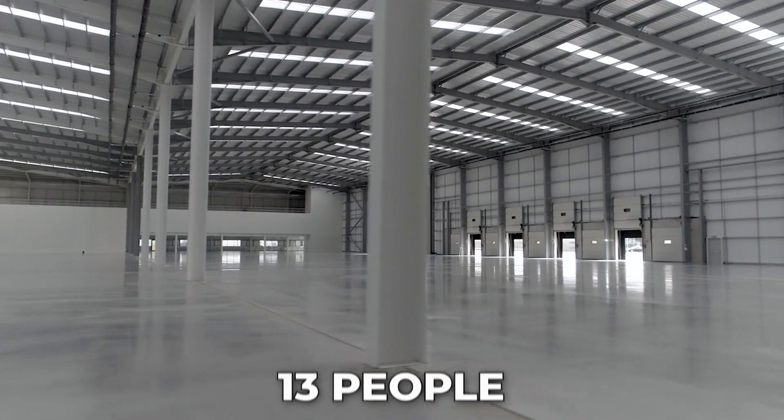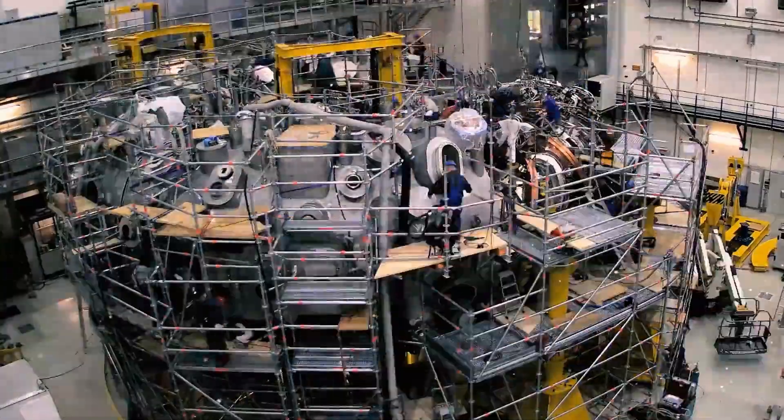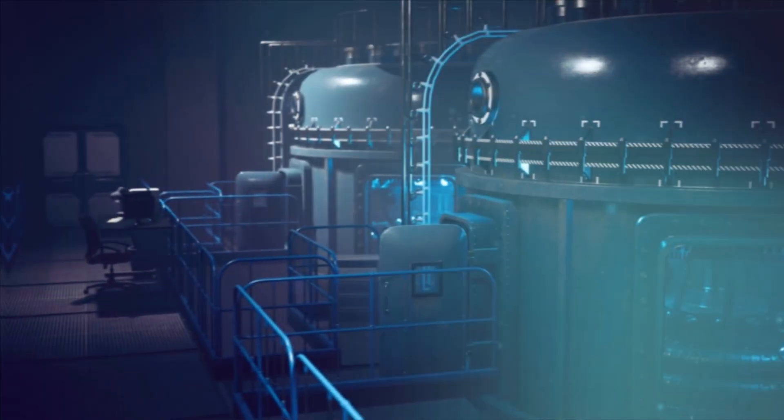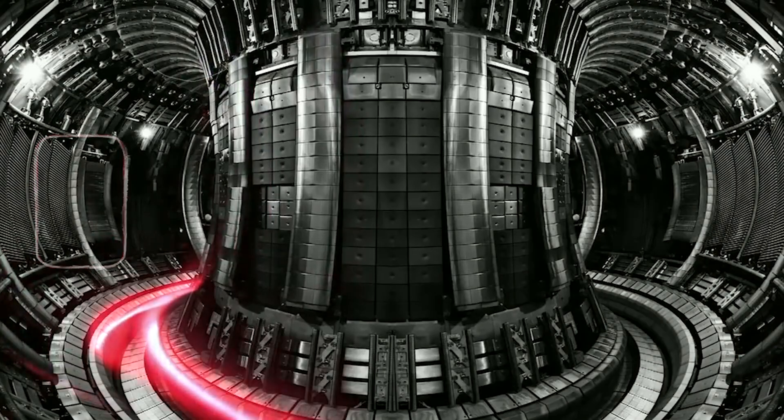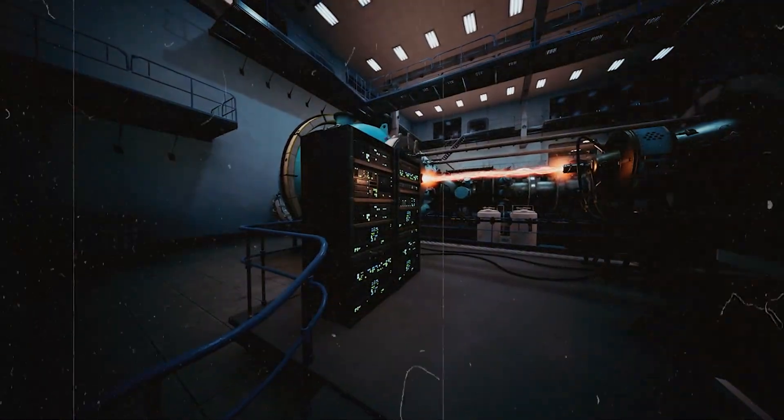They rented a warehouse and hired 13 people. Because the device was compact, they could redesign it constantly. They built 27 versions in one year. In February, the first orbitron reached 50-80 kilovolts. When filled with deuterium, it produced fusion neutrons. That success unlocked their Series A.